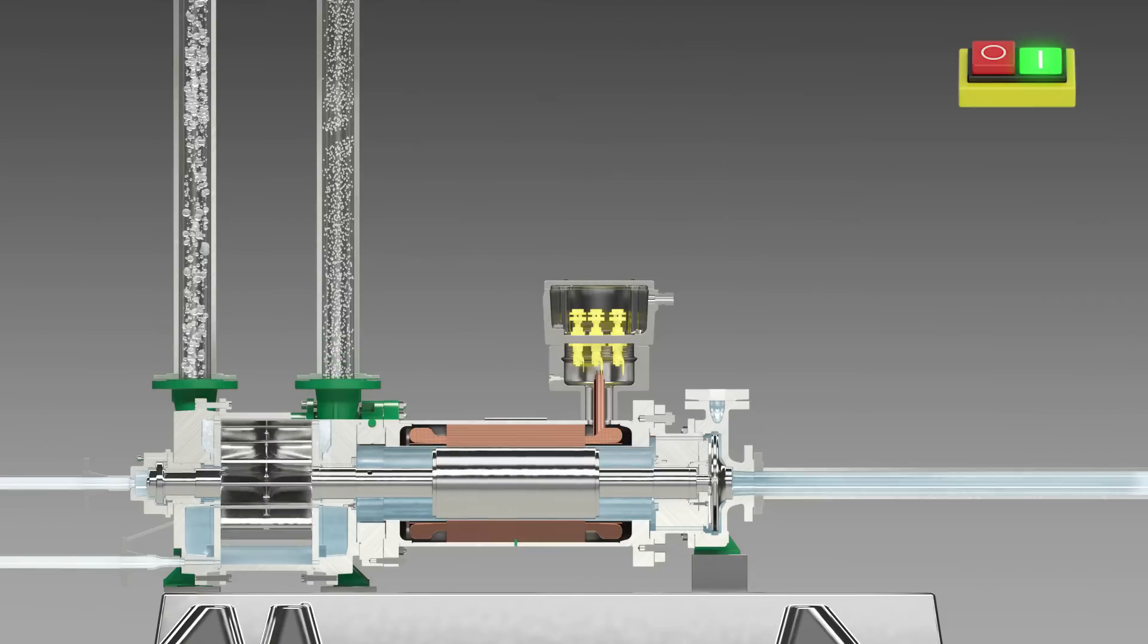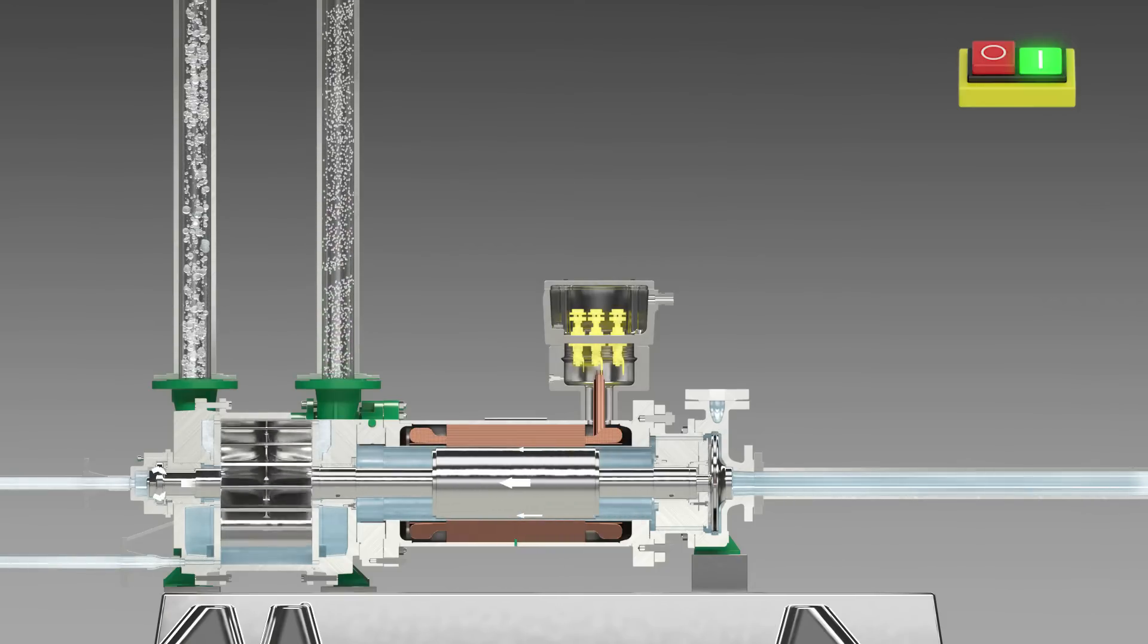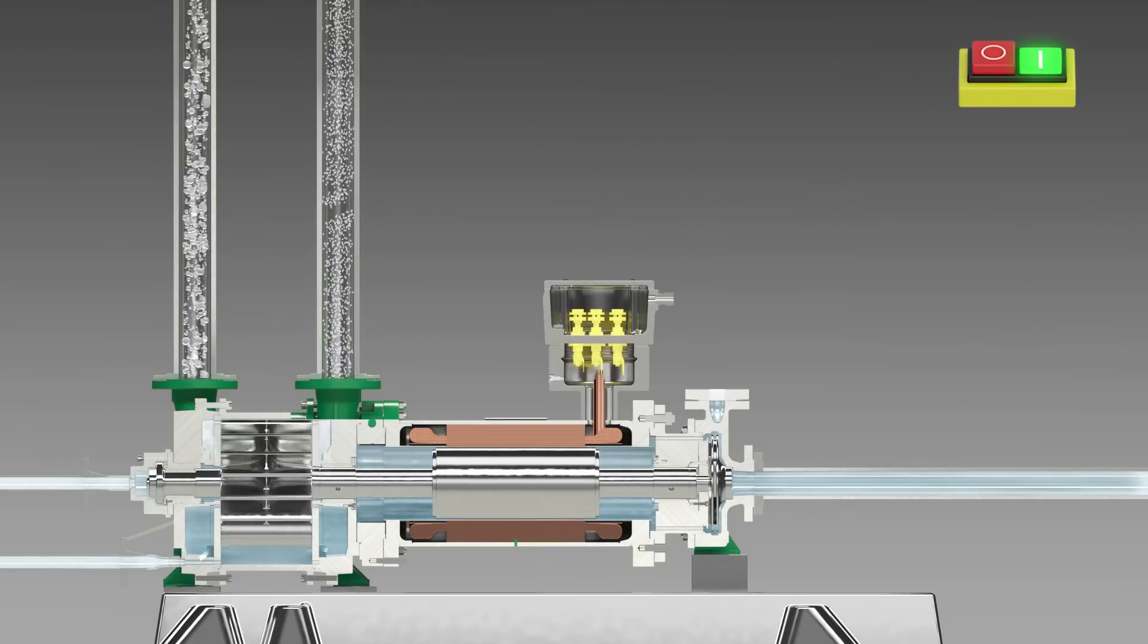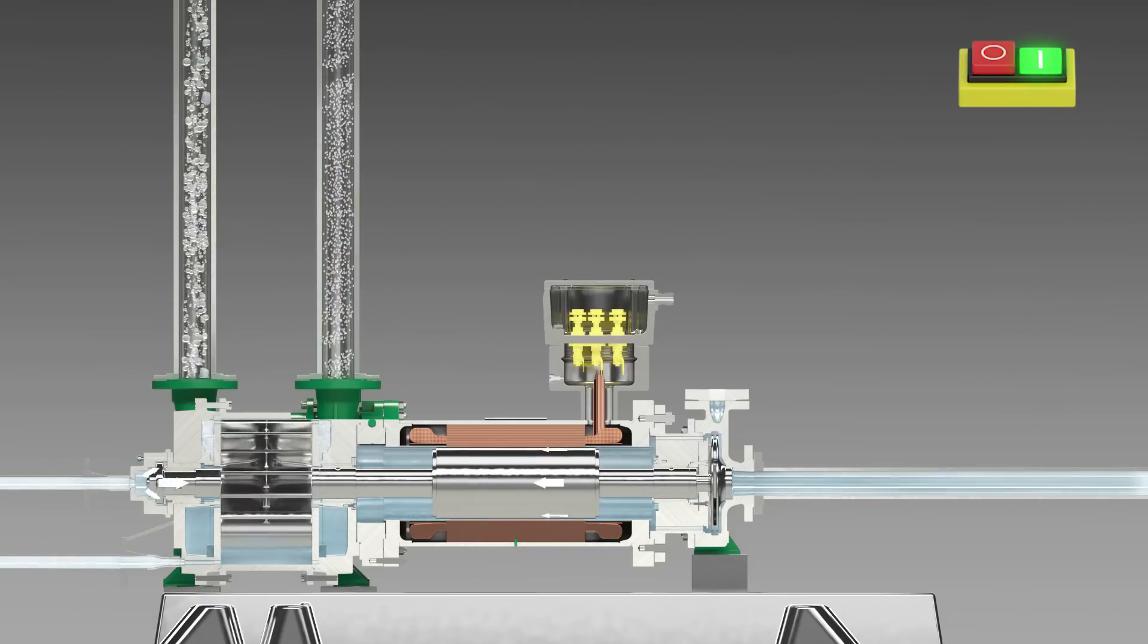To cool the motor and lubricate the hydrodynamic plane bearings, the operating fluid is fed in separately on the motor side and returned to the pumping chamber using the rotor with the help of an internal impeller.